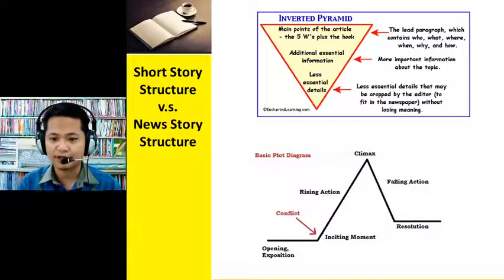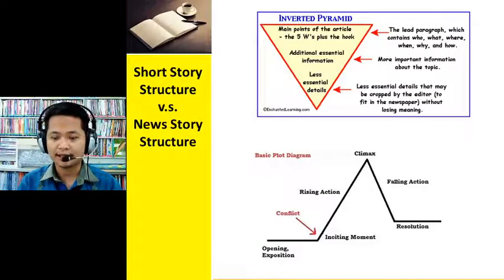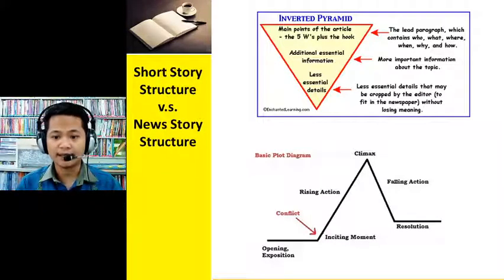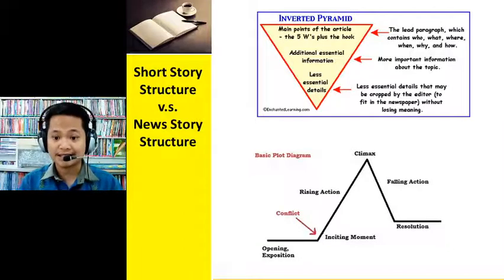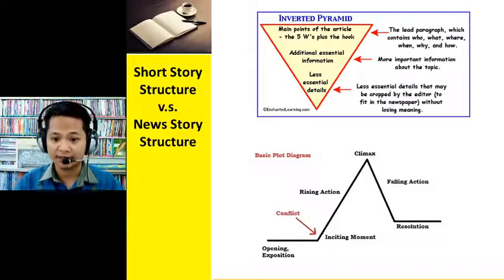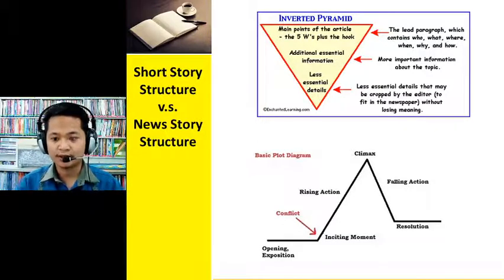So as you can see, the most intense part — the peak — is at the middle or near the end of the short story. If you compare that to the structure of a news story, you can see that it is an inverted pyramid. At the beginning of the story, you must already provide the most important content — the 5 W's and H: who, what, where, when, why, and how. The succeeding paragraphs contain additional information, with the degree of importance decreasing — from the most important to the least important details.